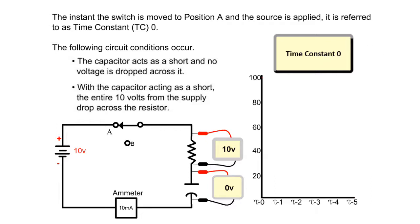The capacitor acts as a short and no voltage is dropped across it. With the capacitor acting as a short, the entire 10 volts from the supply drop across the resistor.